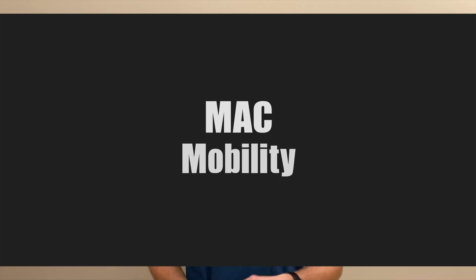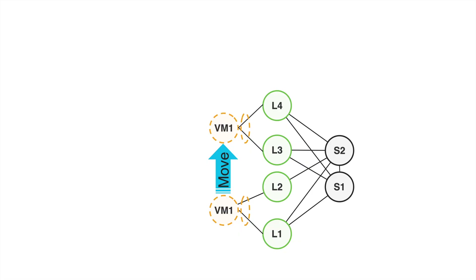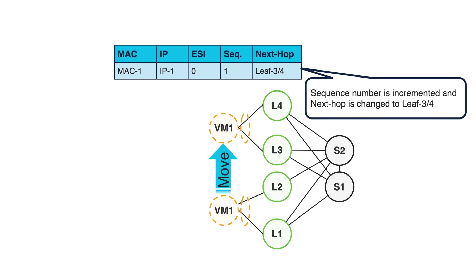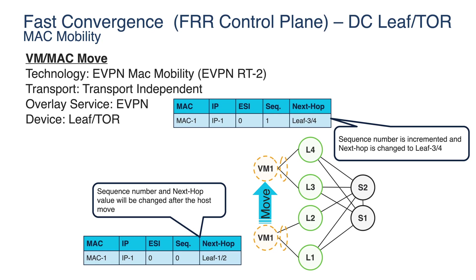Another scenario is very EVPN-specific, and it's about MAC mobility. This is something we introduced at the beginning of EVPN — it basically brings a sequence number when advertising MAC addresses. Initially, I have a VM connected to leaf1 and leaf2, which will advertise the VM's MAC address. But when I move the VM behind L3 or L4, once they learn this MAC address, they will increase the sequence number when advertising the new route type 2. So everyone will immediately overwrite this information in the forwarding table because they will see the higher sequence number.